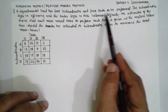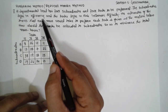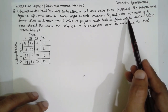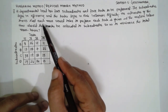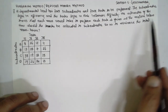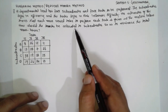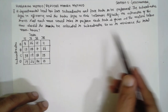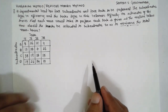A departmental head has a force of four subordinates and four tasks to be performed. The subordinates differ in efficiency and the tasks differ in their intrinsic difficulty. His estimate of the time each man would take to perform each task is given in the matrix below. The question is: how should the tasks be allotted to subordinates so as to minimize the total man-hours? This is a minimization problem.